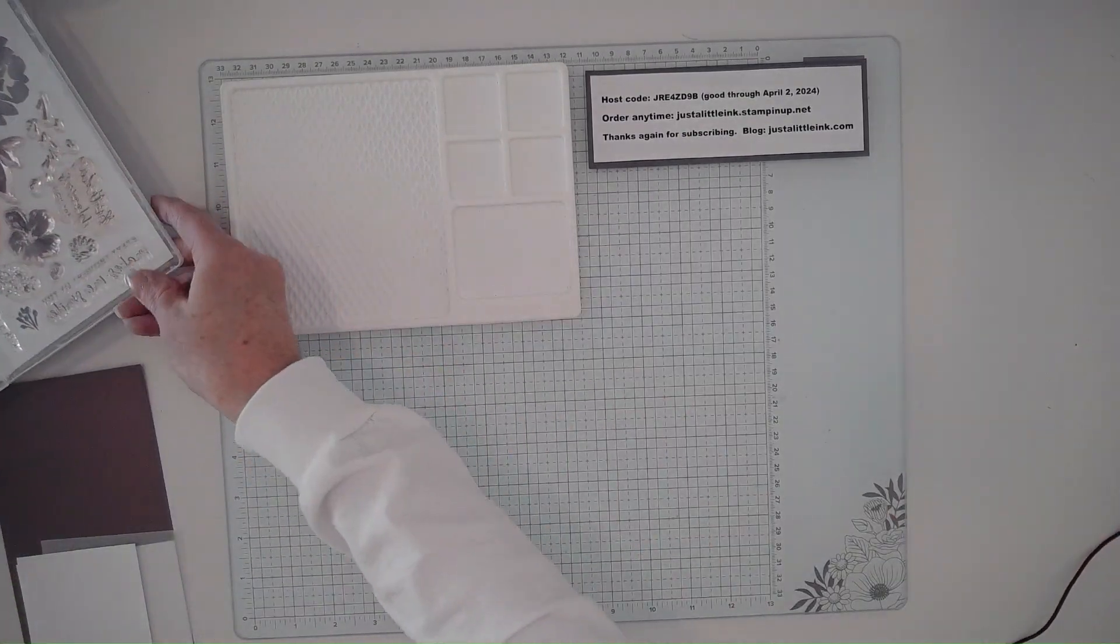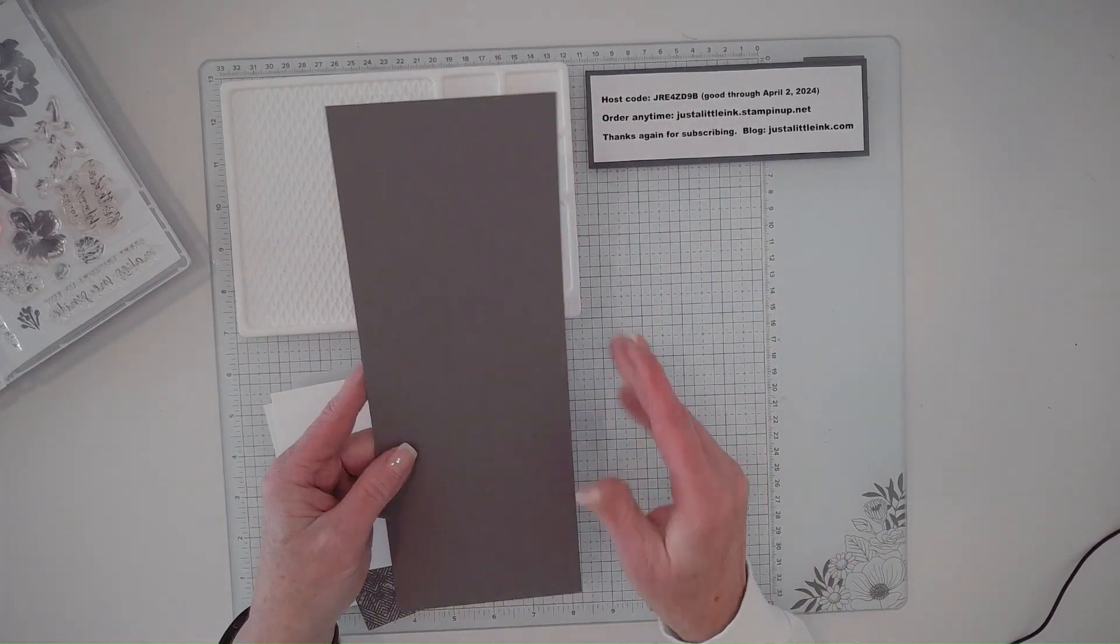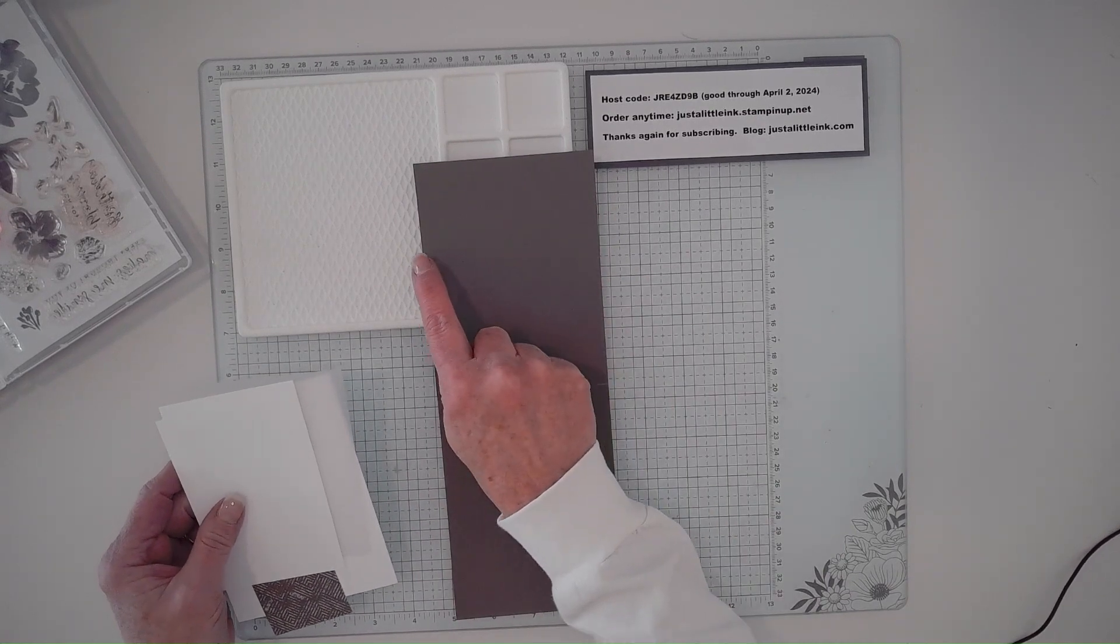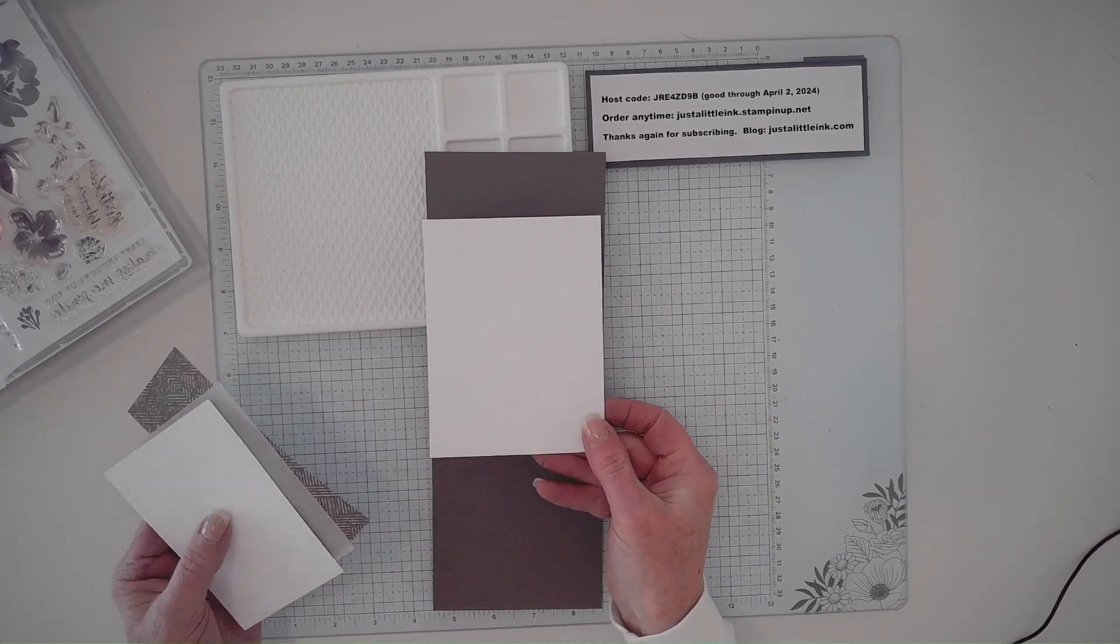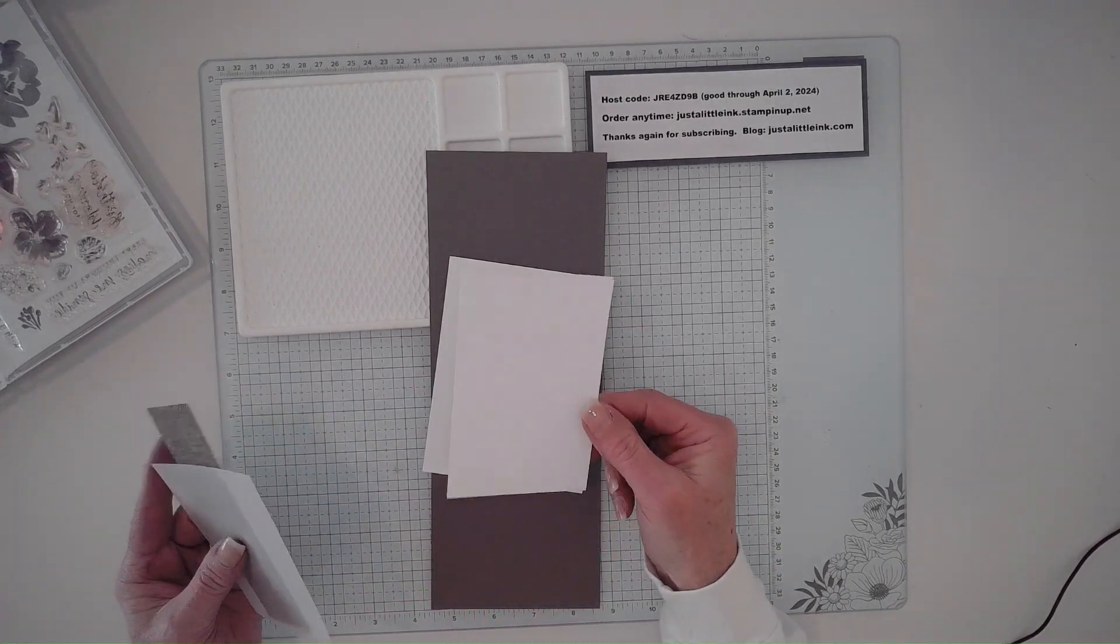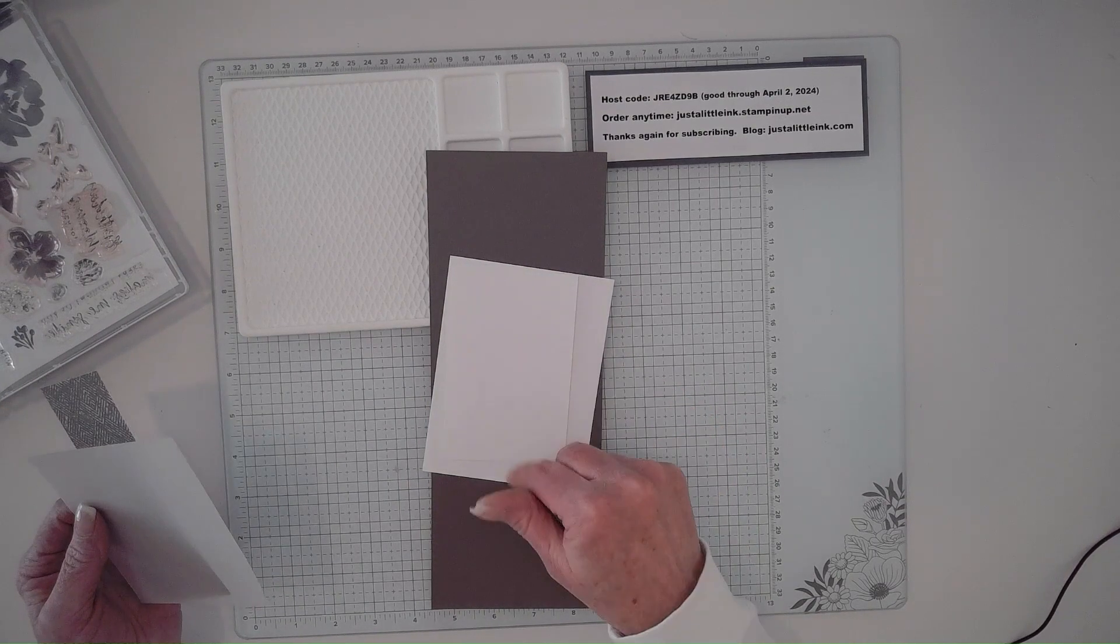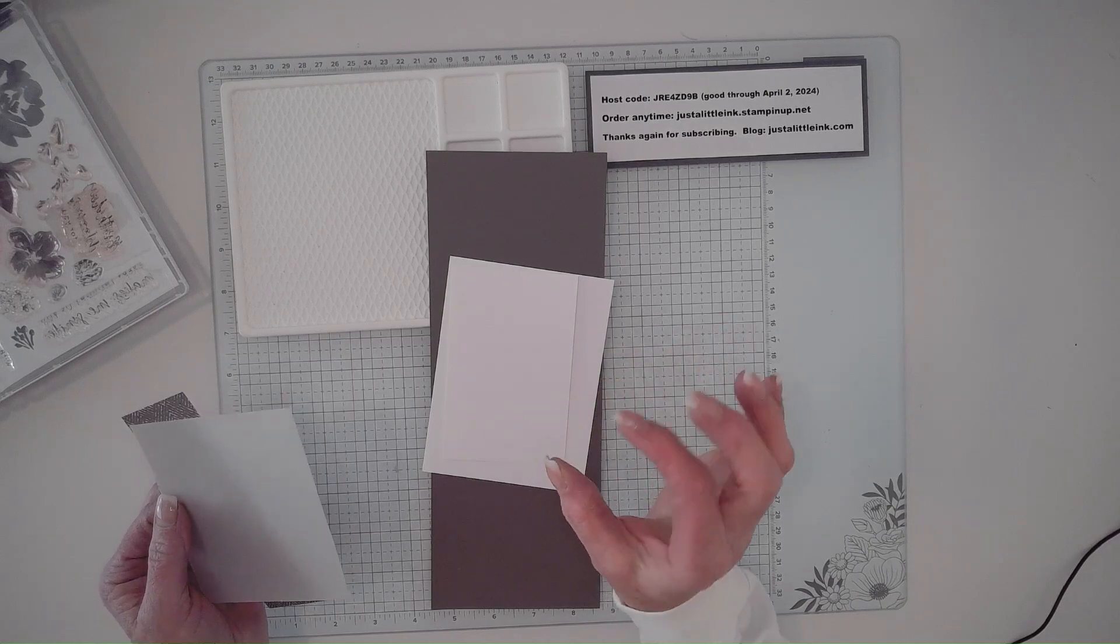I'm using Pebble Path, which is becoming one of my most favorite colors. This is a 2023-2025 in color. This is four and a quarter by eleven inches scored at five and a half. I have a quarter sheet of basic white cardstock, four inches by five and a quarter, as well as a piece that should be five and a quarter by three inches to be able to get the leaves and the flower and that frame cut out.